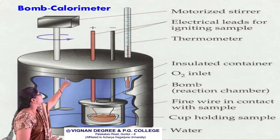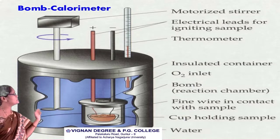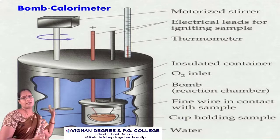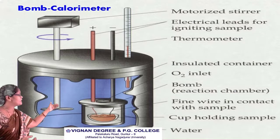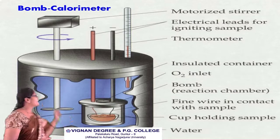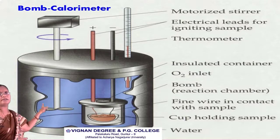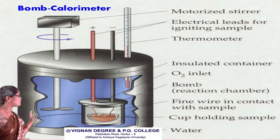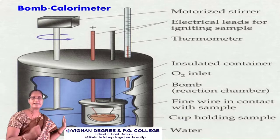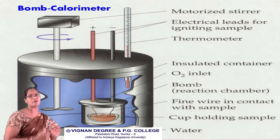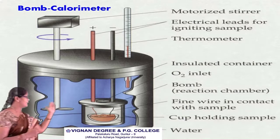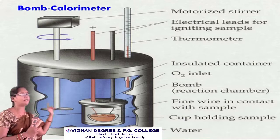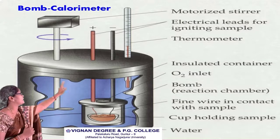The third component is the thermometer, which measures the temperature. With the thermometer, we measure the initial and final temperature of the water. The bomb calorimeter itself is an insulated container, meaning there is no exchange of heat between the system and the surroundings, so the heat liberated by the food material is contained within the system. Another important component is the oxygen inlet — a passage for the entry of oxygen required for ignition.